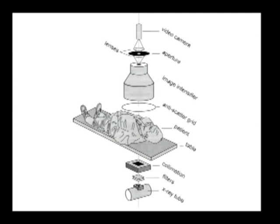A common misunderstanding about radiation exposure is that many clinicians think the x-ray comes from the top and goes to the bottom — it's actually the exact opposite. The source is from the bottom, going to an image intensifier on top. So if you're shielding a patient, you put the lead under them, not on top. Also, you want the intensifier as close to the patient as possible — this minimizes radiation scatter, distortion, and magnification.